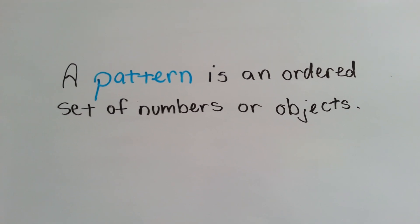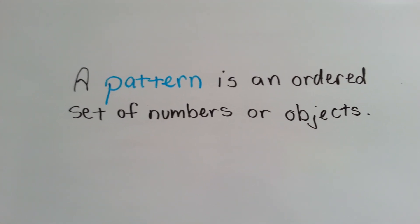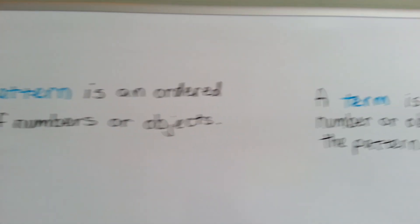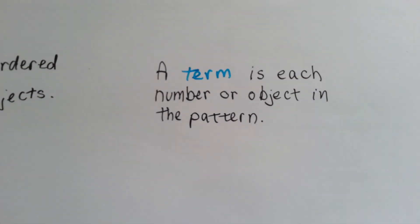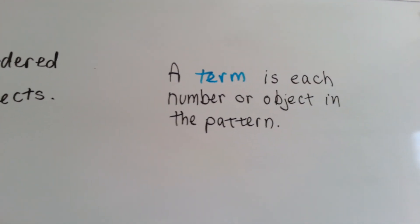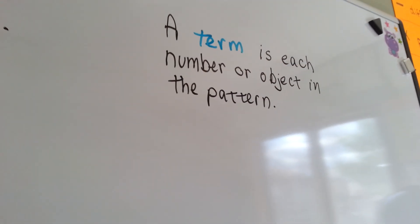Well, believe it or not, even though they may look jumbled up, there's a pattern there. And numbers can be in a pattern also. A term is each number or object in the pattern. Whether they're flowers or the number 5, those are the terms of the pattern.